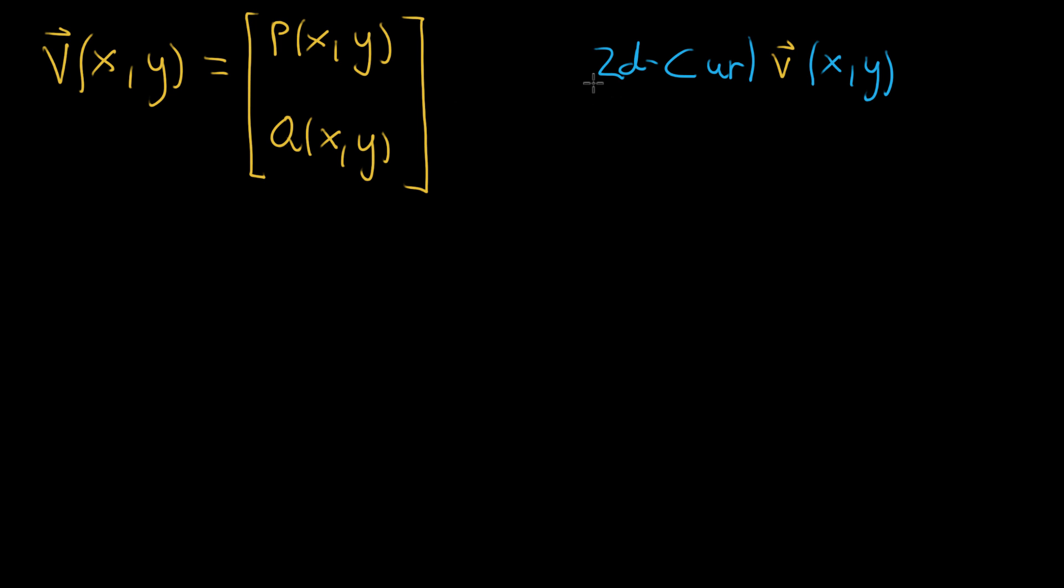So you're kind of thinking of this as a differential thing in the same way that you have a derivative that's going to take in some kind of function. You give it a function, and it gives you a new function, the derivative. Here, you think of this 2D curl as like an operator. You give it a function, a vector field function, and it gives you another function, which in this case will be scalar valued.